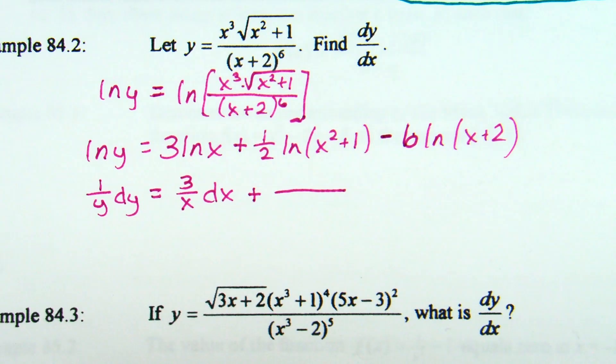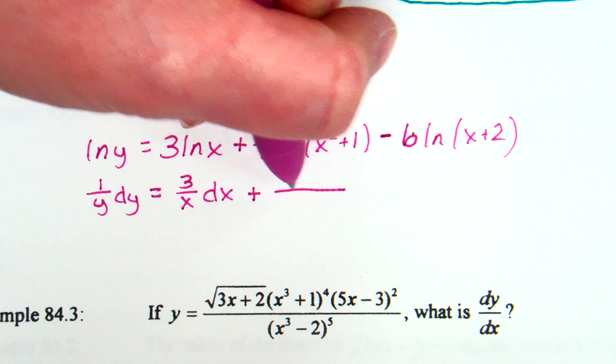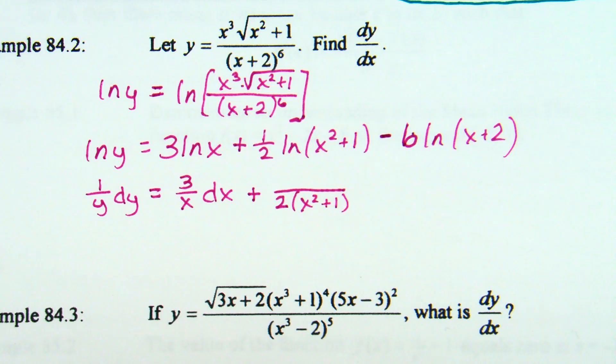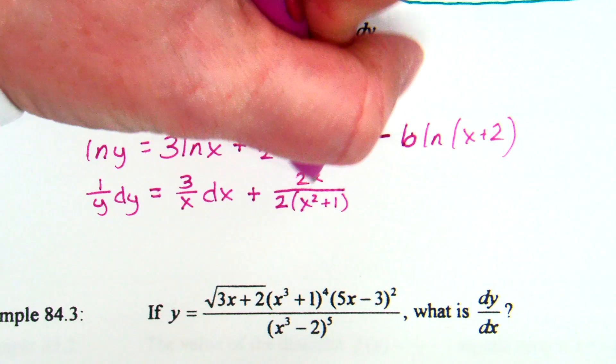For the one-half times natural log of (x² + 1) term: the derivative of natural log of (x² + 1) is 1/(x² + 1), times the derivative of (x² + 1) which is 2x. With the one-half out front, Trevor has a 2 in the denominator — and those twos cancel. Then add a dx. For the next step, those twos will be able to cancel — not a lot, but hey.